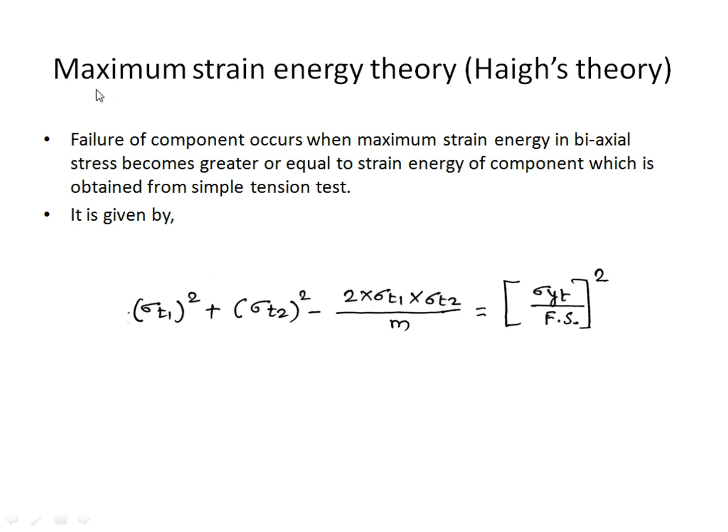The maximum strain energy theory, also known as Haigh's theory, states that failure occurs when the maximum strain energy in the component under biaxial stress equals or exceeds the strain energy from a simple tension test. It is given by: σt1² + σt2² − 2M·σt1·σt2 = (σyt / fs)², where σt1 and σt2 are the tensile stresses, M is Poisson's ratio, and σyt is the yield point strength of the material.